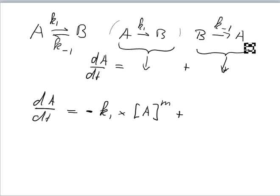now in this case A is produced, so plus K-1 times the concentration of B to the power of, let's call it N. Very often these M and N coefficients are 1, but they don't have to be.